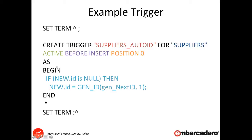You also have the ability to declare local variables — this is covered in the paper but we won't go into detail here. You can define local variables to collect data and run as part of your block of code between the BEGIN and END. At the end of the trigger, just terminate with the caret and that completes and runs the statement. Then we set the terminator back to the typical semicolon. The reason we have to set the terminator is because within the trigger body we need to use the semicolon at the end of lines of code — that's why we set the terminator to something other than its normal value.